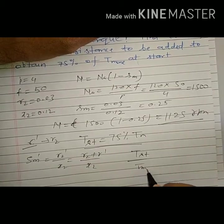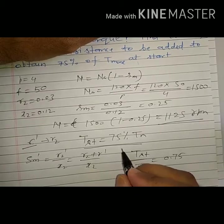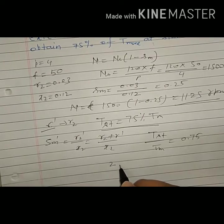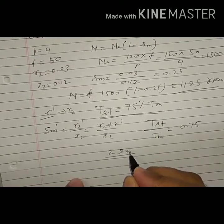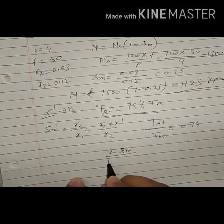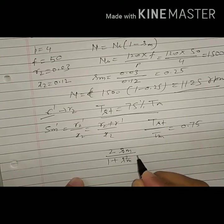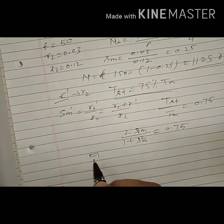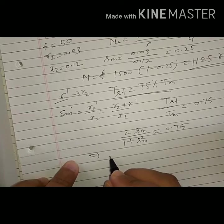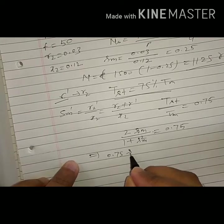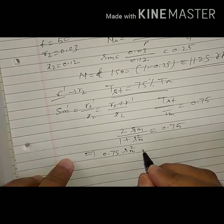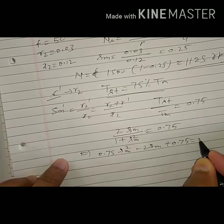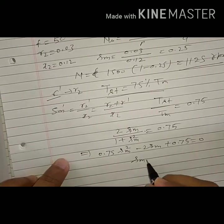This relation we can use: TST by TM as 0.75, 75 percent means 0.75. And what is this? This is 2 SM by formula, torque ratio formula, 2 SM by 1 plus SM square equal to 0.75. So this I can simplify as 0.75 SM square minus 2 SM plus 0.75 equal to 0.